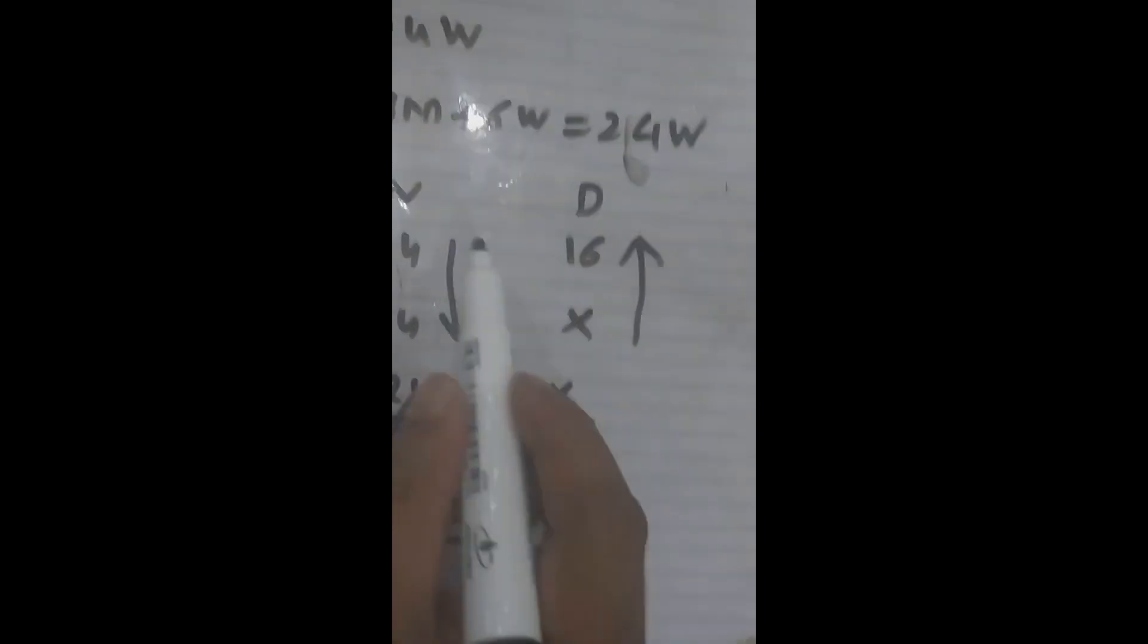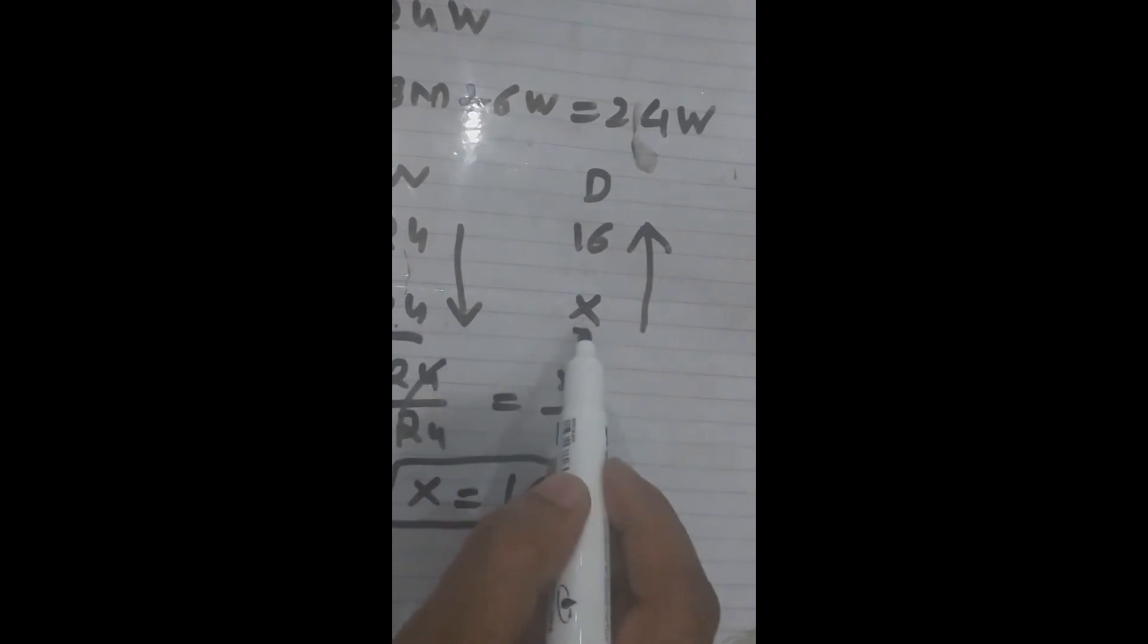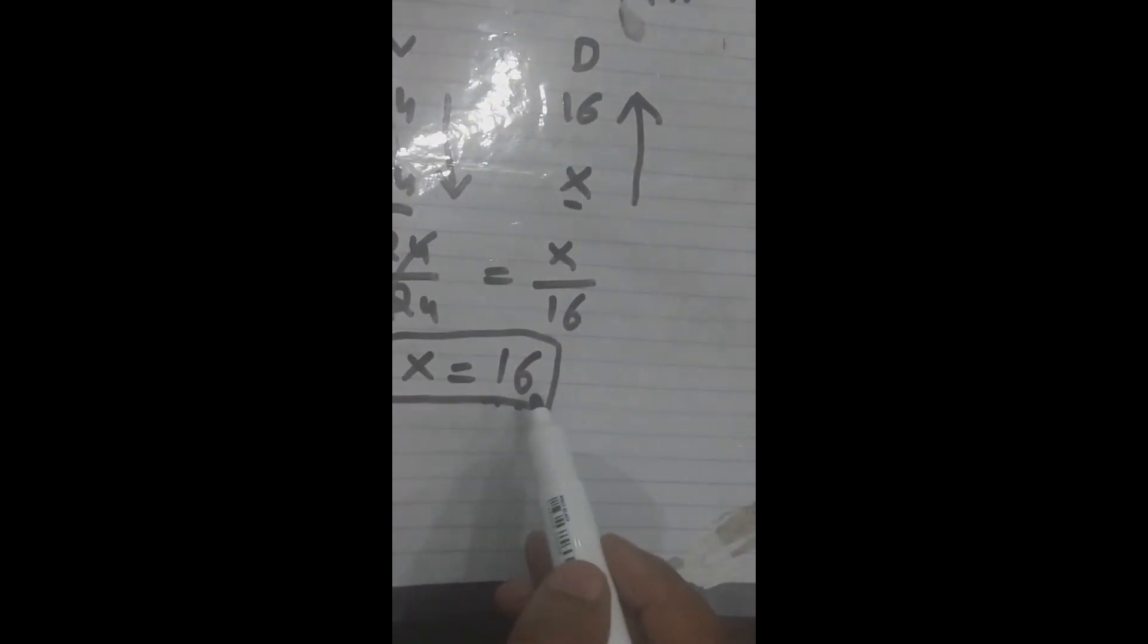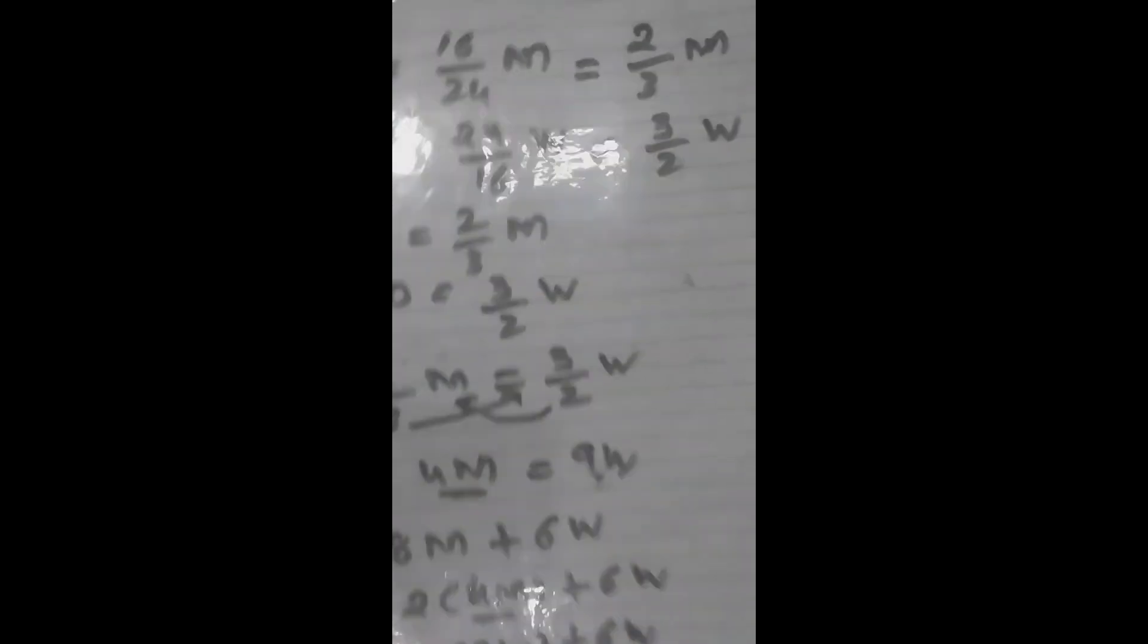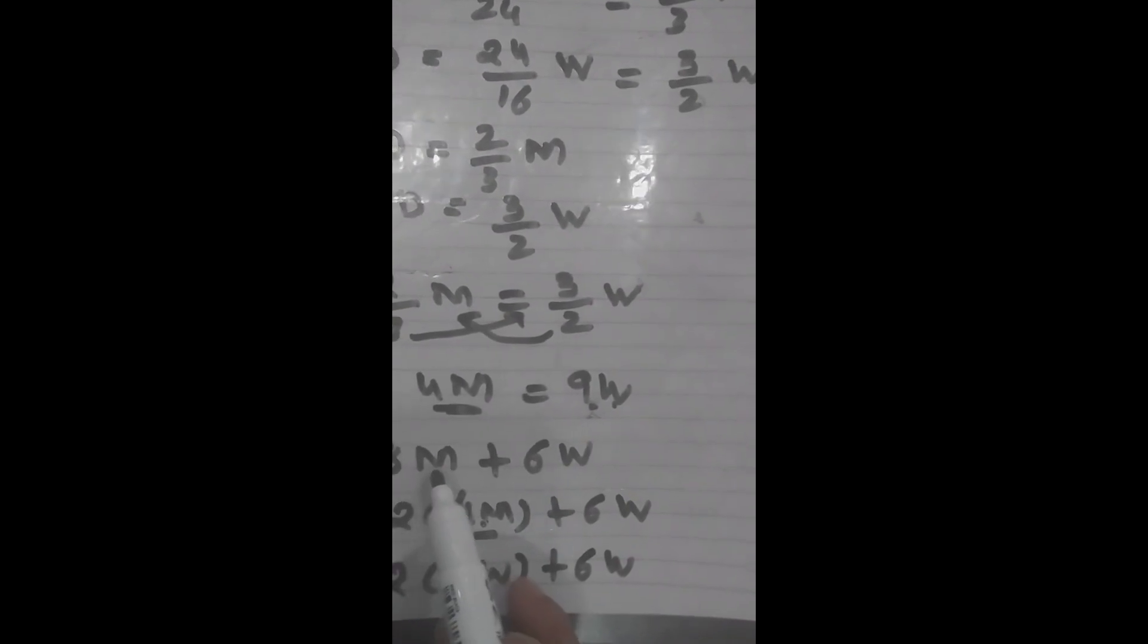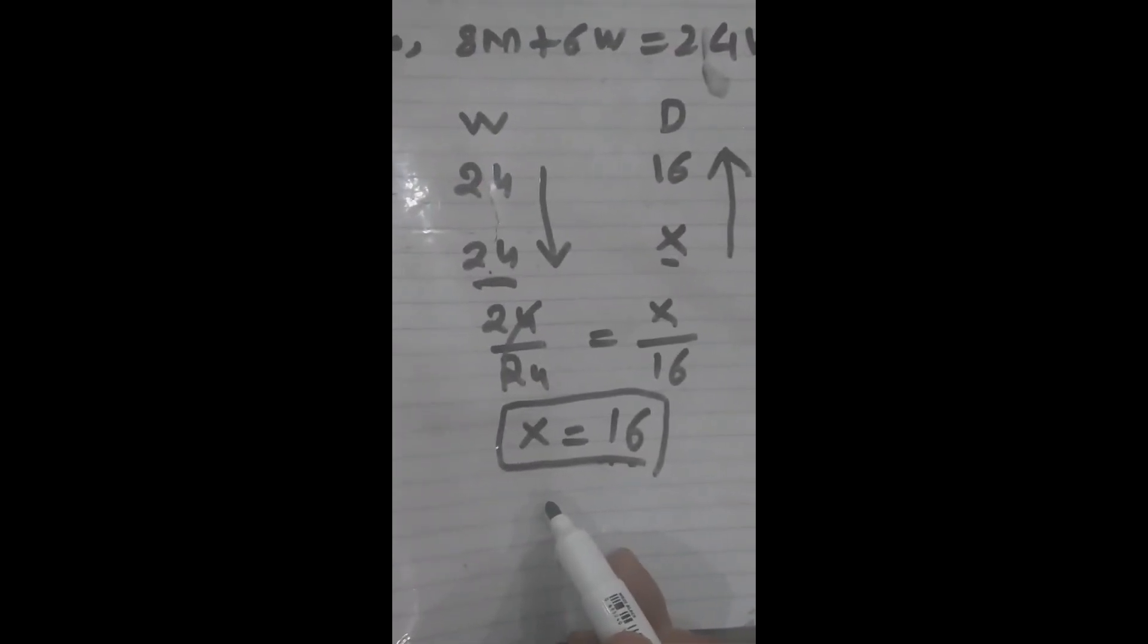So 24 women can do the work in 16 days, or we can say that 8 men and 6 women can finish the work in 16 days. So I think this is the correct way of doing the question. But this option of 16 days is not present in the given options for the answer. So I request you to check if I am wrong or others are right. Thank you very much.